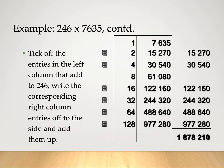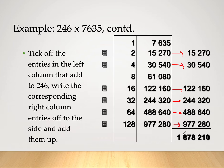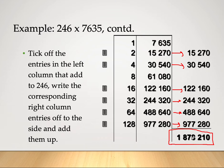We copy the corresponding right-column entries for each ticked row and add them up. The sum is 1,878,210. That is our value for the product of 246 times 7,635.